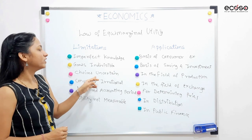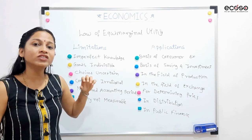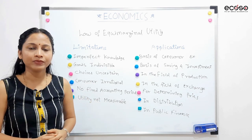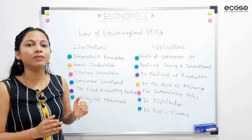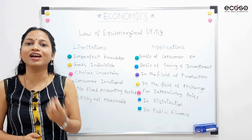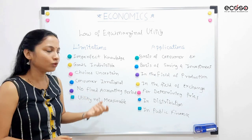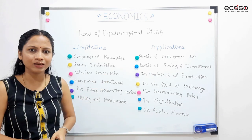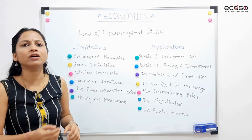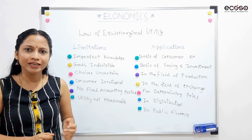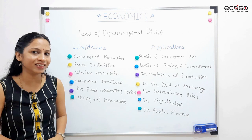Third is choices are uncertain. Market mein jo choices available hain, woh certain hain — nishchit hain — aisa assume kiya hai. But market mein har baar jaate hain toh kuch na kuch naya milta hai — market mein nai commodities aati rehti hain. Toh choices certain kaise hain? This time market mein kuch commodity purchase karungi, aur next time uska koi alternative milti hai toh main woh purchase karungi. It means consumer ki choices uncertain hain, nishchit nahi hain. Fourth is consumer is irrational.